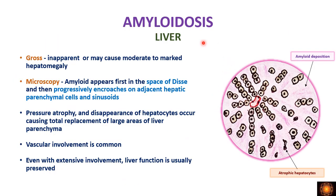Coming to the liver, the deposition can be inapparent or there can be moderate to marked hepatomegaly. Microscopically, deposits occur in the space of Disse, just below the endothelium and between the hepatocytes. As deposition increases it encroaches on the hepatic parenchymal cells and sinusoids, causing pressure atrophy and atrophic hepatocytes. Eventually the entire hepatic parenchyma is replaced by amyloid deposits, but liver function is usually preserved.